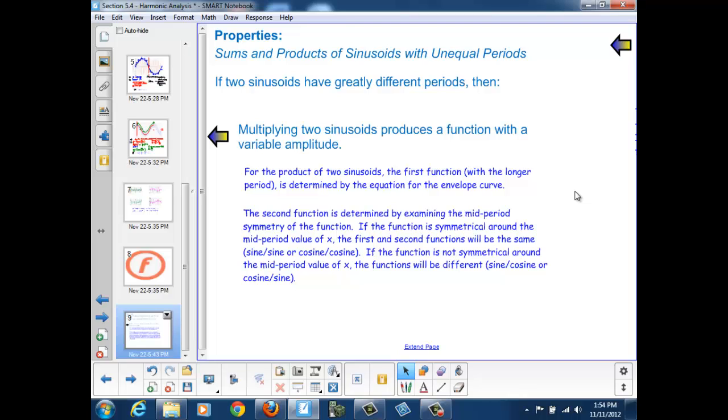If the function is not symmetrical around the midperiod value of x, the functions will be different, sine and cosine, or cosine and sine.